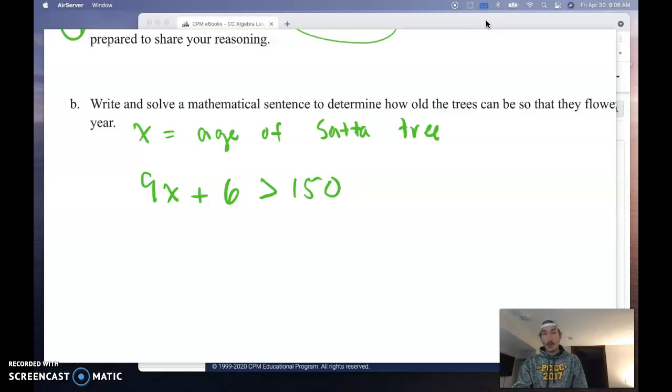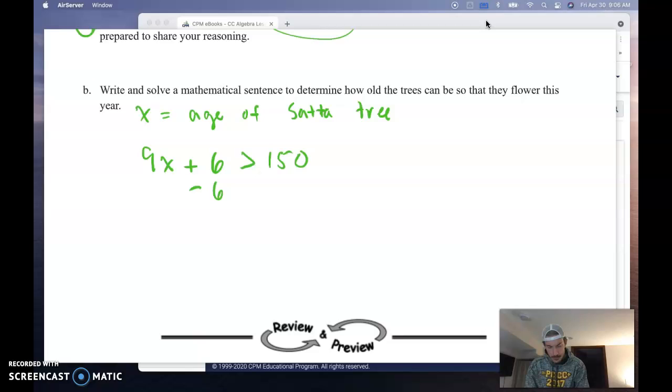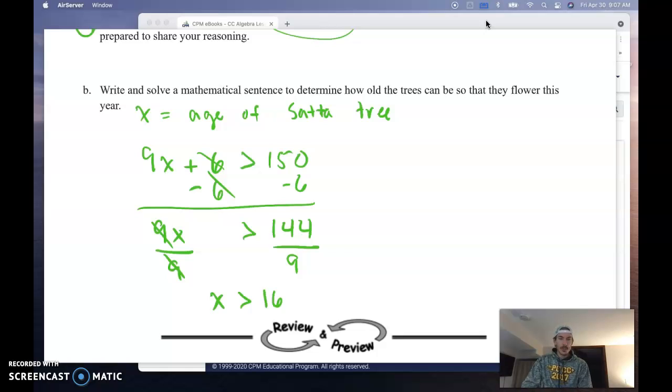Now we are going to go ahead and solve this. I'm going to subtract 6 from both sides. Those cancel. I get 9x is greater than 150 minus 6 is 144. I am going to be isolating that x. I want to get x by itself so I know how old those trees need to be. So I'll divide by 9 because it's 9 times x. And we undo multiplication with division. These cancel. And I get x is greater than 16.